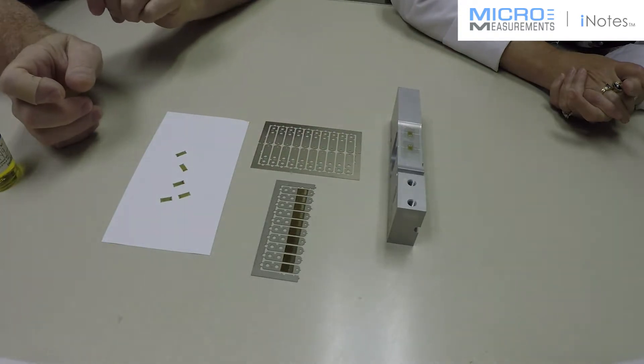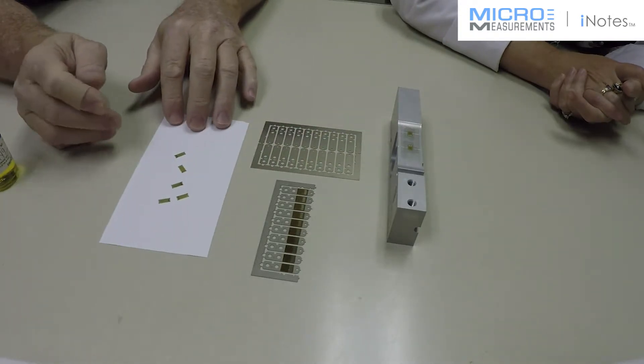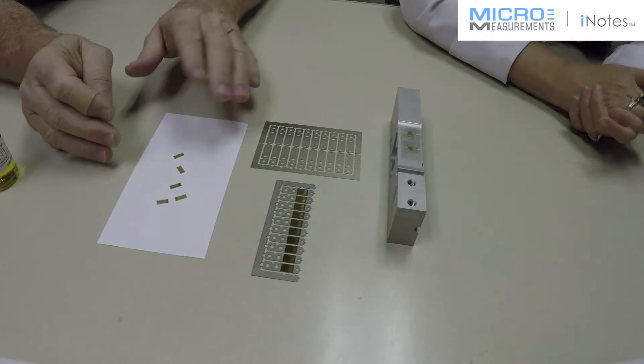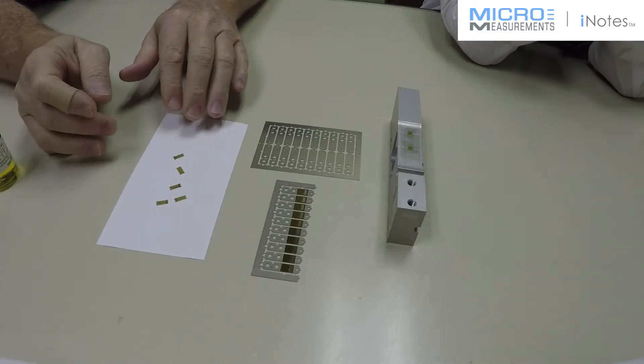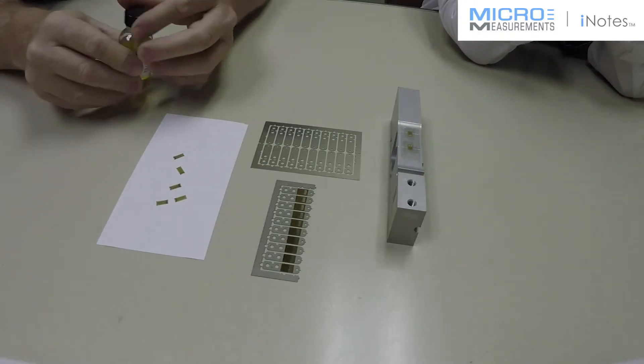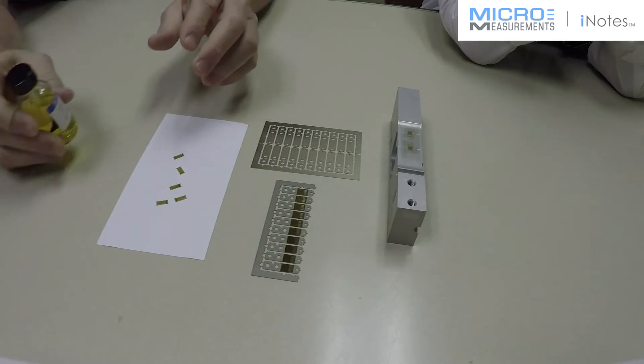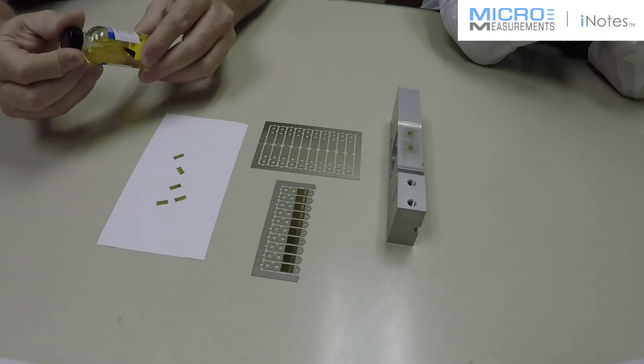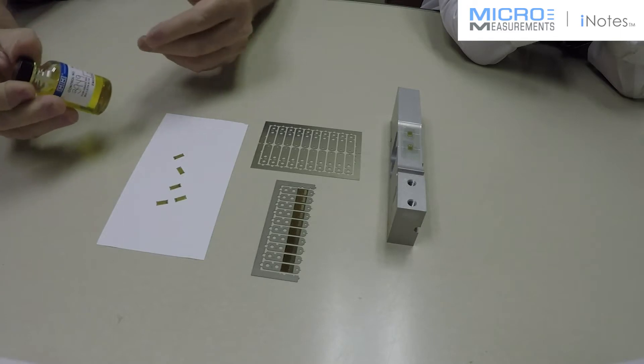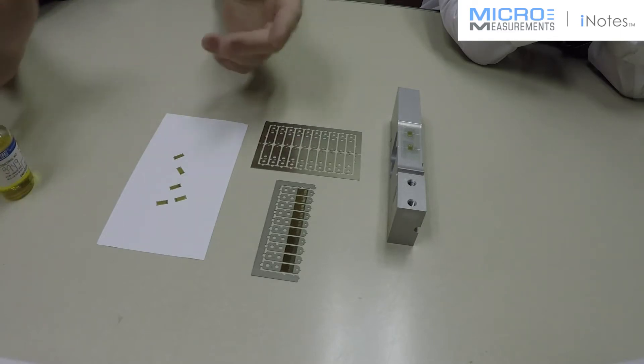So the benefits of the B-stage gauges, the pre-applied resin, is that you don't have to buy a separate bottle of adhesive - another inventory item that you have to control its storage and all that.